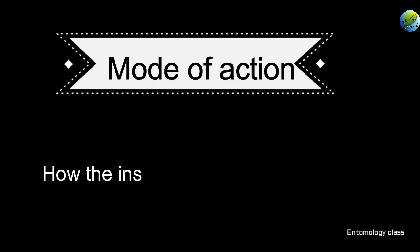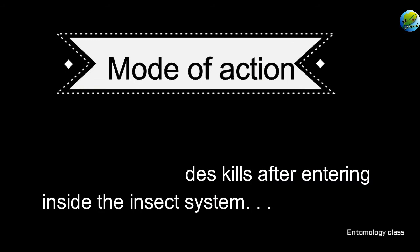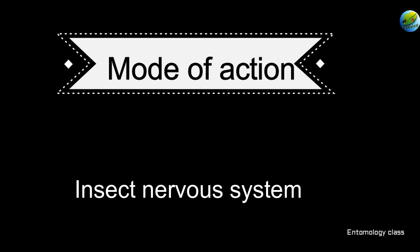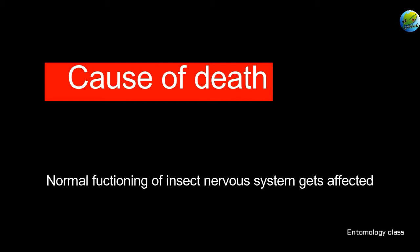Next, we are concentrating on mode of action — how the insecticide kills the insect after entering inside the system of the insect. There are various ways by which insecticides kill an insect. The most important target area of the majority of insecticides is the nervous system. Various parts of the nervous system are modified, inhibited, or overstimulated to change its normal function, which ultimately leads to the death of an insect.